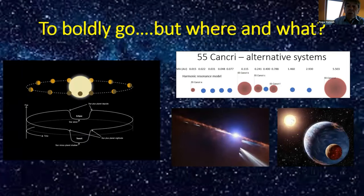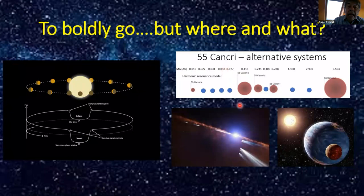Some possible targets: secondary transits we've talked about, additional planets, and maybe exocomets or even exomoons.